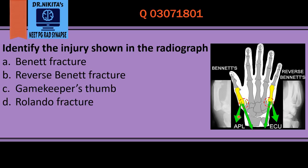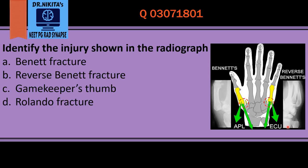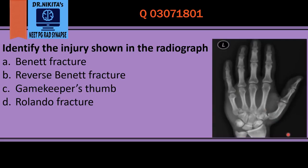In Bennett's fracture there is a pull by abductor pollicis longus. In Reverse Bennett's, on the little finger side — the ulnar side — there is a pull by extensor carpi ulnaris. Looking at this radiograph, we see a fracture at the fifth metacarpal base, so this becomes a Reverse Bennett's fracture.